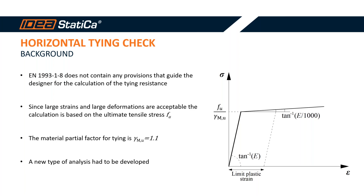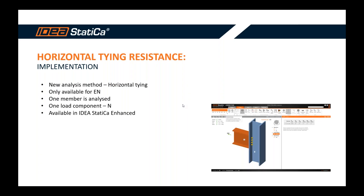For more details on the implementation side, I will pass the presenter to Ralph, who will demonstrate the use in Idea Statica. As Kostis has already explained, we reacted to the survey sent out last year and high on that list was horizontal tying resistance. So we've implemented a new analysis method and quite simply called it horizontal tying. Some restrictions: it's only available for Eurocode at the moment, only one member at a time is analyzed with only one load component, and from a licensing perspective this is only available from Idea Statica Enhanced onwards.